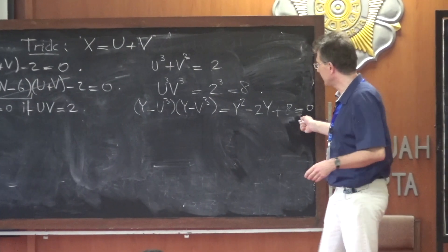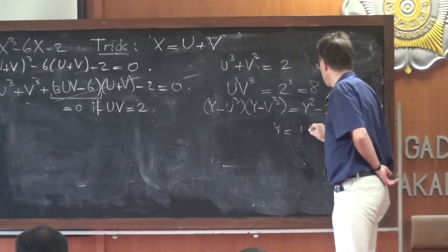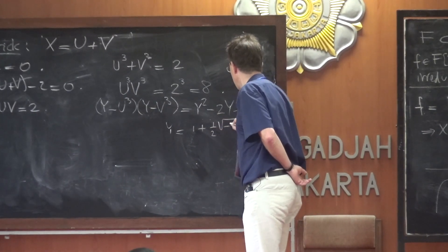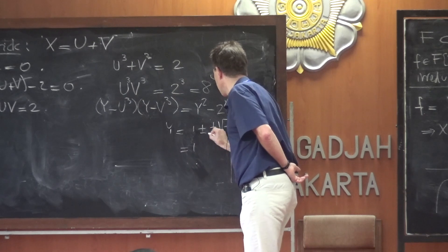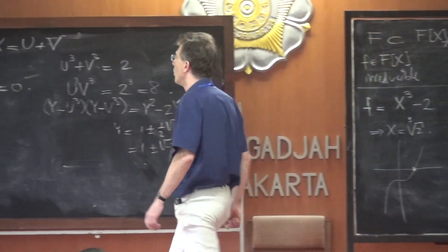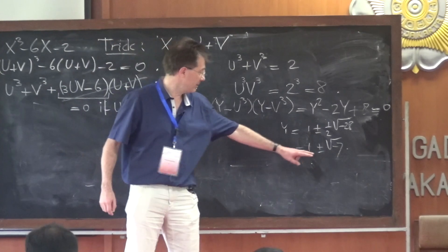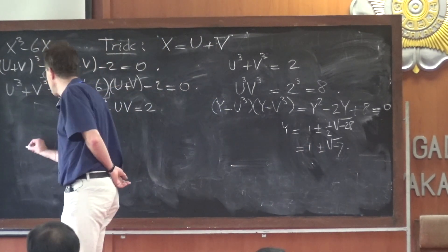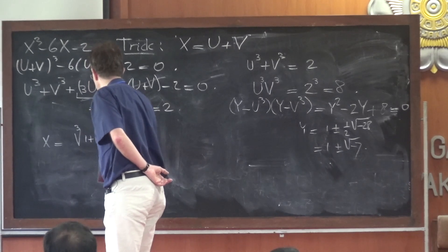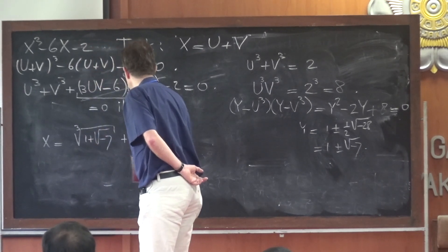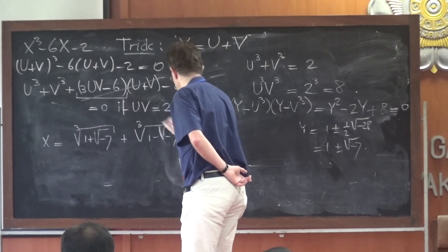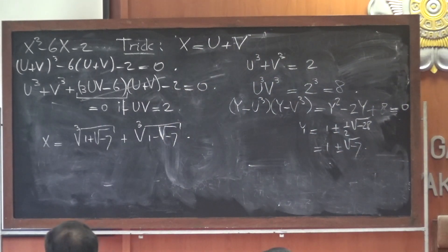After correcting the missing factor of one-half, y is 1 plus or minus one-half times the square root of minus 28, which is the same as 1 plus or minus the square root of minus 7. So we've solved the equation: y is u cubed and v cubed; x is u plus v; and u cubed and v cubed are these two quantities. So x equals the cube root of 1 plus square root of minus 7, plus the cube root of 1 minus square root of minus 7.